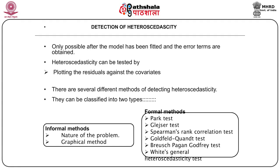Methods of detecting heteroscedasticity can be classified broadly into two types. Informal methods include: knowing the nature of the problem, and the graphical method. Formal methods include a number of quantitative tests, some of which are the Park test, Glejser test, Spearman's rank correlation test, Goldfeld-Quandt test, Breusch-Pagan-Godfrey test, and White's general heteroscedasticity test.